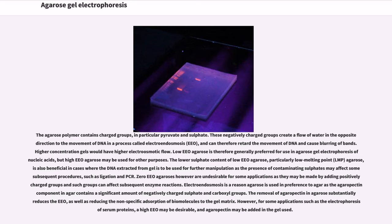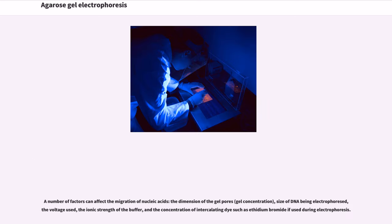However, for some applications such as the electrophoresis of serum proteins, a high EEO may be desirable, and agaropectin may be added to the gel. A number of factors can affect the migration of nucleic acids: the dimension of the gel pores, gel concentration, size of DNA being electrophoresed, the voltage used, the ionic strength of the buffer, and the concentration of intercalating dye such as ethidium bromide if used during electrophoresis.